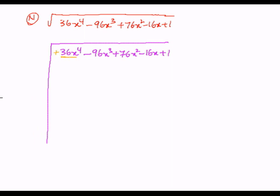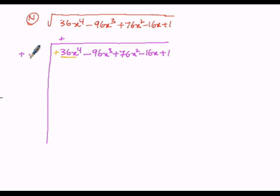We have to take the positive sign at both. Since we are finding the square roots, we have to take only the squares. Whatever condition we have taken here, the same condition must be taken here as a perfect square. So here it is a square root, we have to take only squares.